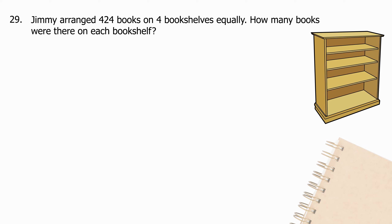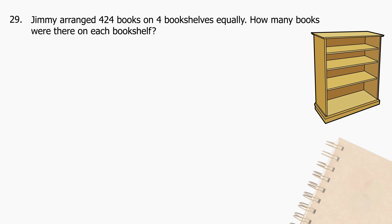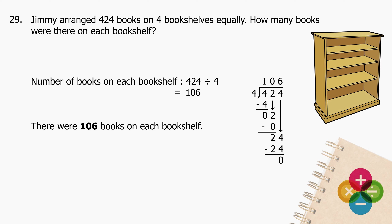Question 29: Jimmy arranged 424 books on 4 bookshelves equally. How many books were there on each bookshelf? Divide 424 by 4 and the quotient is 106. There were 106 books on each bookshelf.